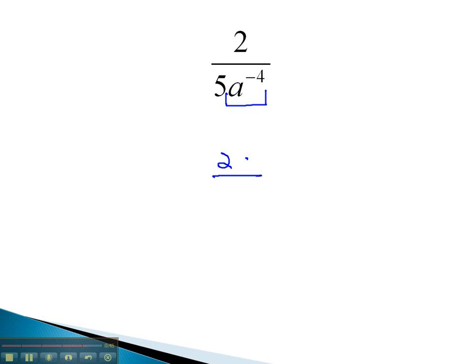We have a 2 in the numerator, and a to the 4th moves to the numerator. A 5 is in the denominator.